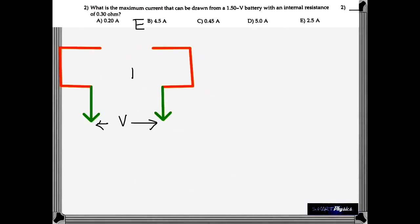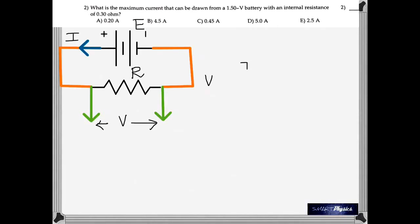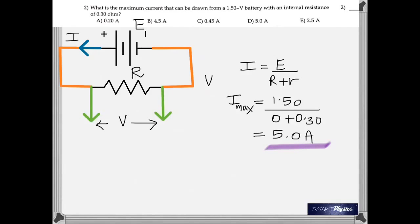Here you have to find the maximum current that can be drawn. See, the maximum current is drawn when the external resistance is 0, which means practically it is not being used. So, when the external resistance becomes 0, then the denominator becomes minimum, so the current becomes maximum. So, 5 ampere is the maximum current that can be drawn.